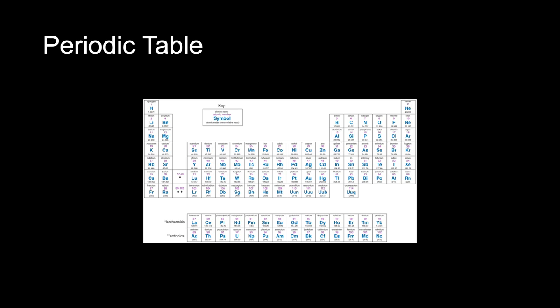Another means of classifying elements is the periodic table. The periodic table is organized by periods and groups. There are seven periods arranged as rows and eight groups arranged as columns. Elements in each period have the same number of electron shells, and the number of shells increases as one moves from the top row, period 1, to the bottom row, period 7. This means that the atoms of the elements become increasingly larger and more complex.